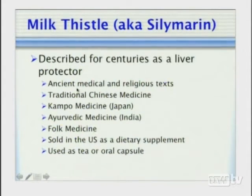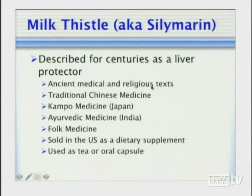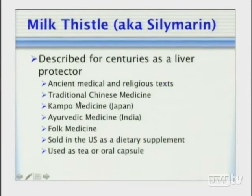Milk thistle and Silymarin have been described for centuries as liver protectors, with references in ancient medical and religious texts, traditional Chinese medicine, kampo medicine in Japan, Ayurvedic medicine in India, and folk medicine. Because it's a CAM approach, it's not FDA approved, so these extracts are sold in the U.S. as a dietary supplement, used as a tea, oral capsule, or tincture. Phylogenetically it's a member of the plant family; the official name for milk thistle is Silybum marianum.